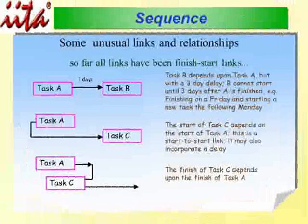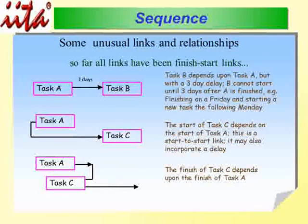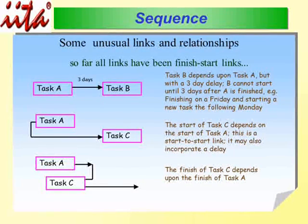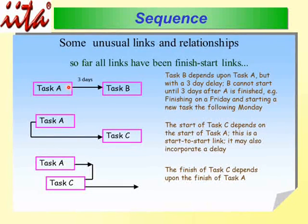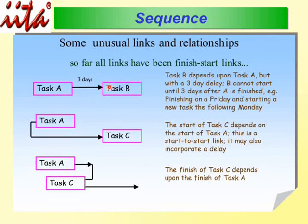We are going to continue with what we introduced in Part 1. It's about sequencing of tasks. The most important type of sequencing is called Finish-to-Start. In this example, task A starts and ends, and then task B takes off, but there is a 3-day lag. If task A finishes on Friday, with no work on Saturday or Sunday, task B will start on the third day.